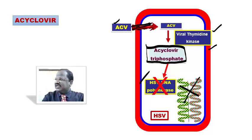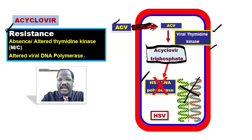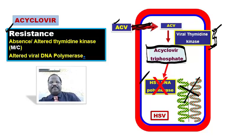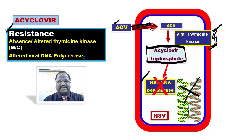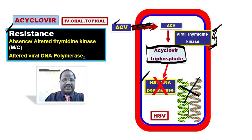Since the drug needs activation, resistance is an important question. The resistance of acyclovir may be due to absence of thymidine kinase enzyme, or alteration or mutation of thymidine kinase enzyme, or sometimes alteration of viral DNA polymerase. But the most important mechanism responsible for resistance is due to alteration of thymidine kinase.